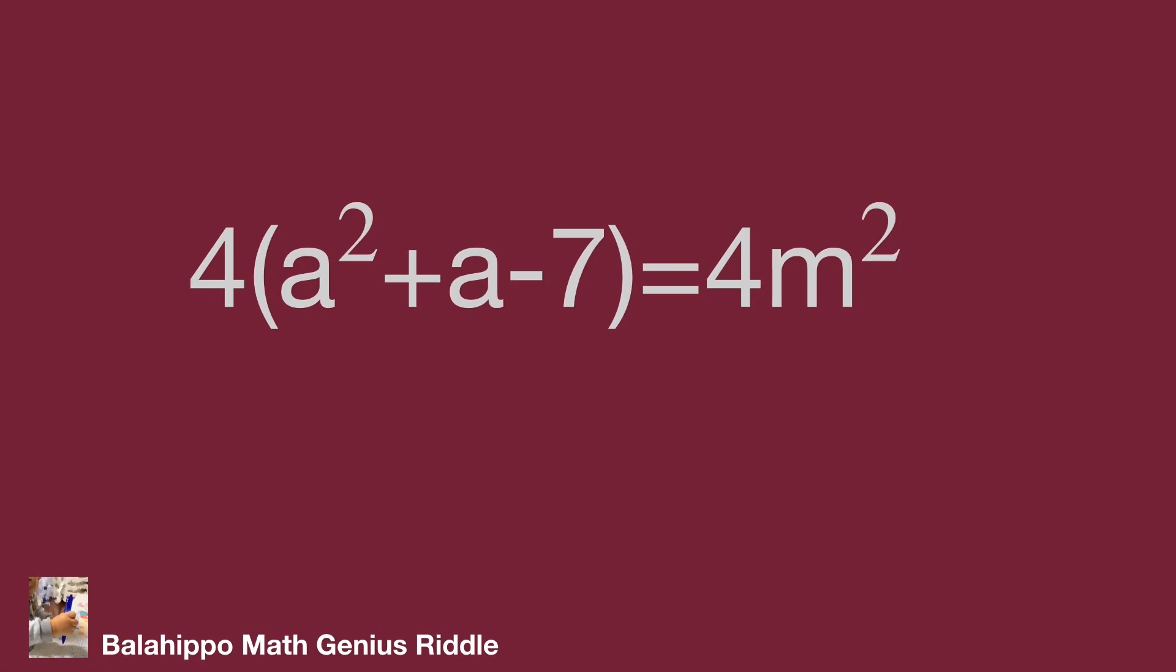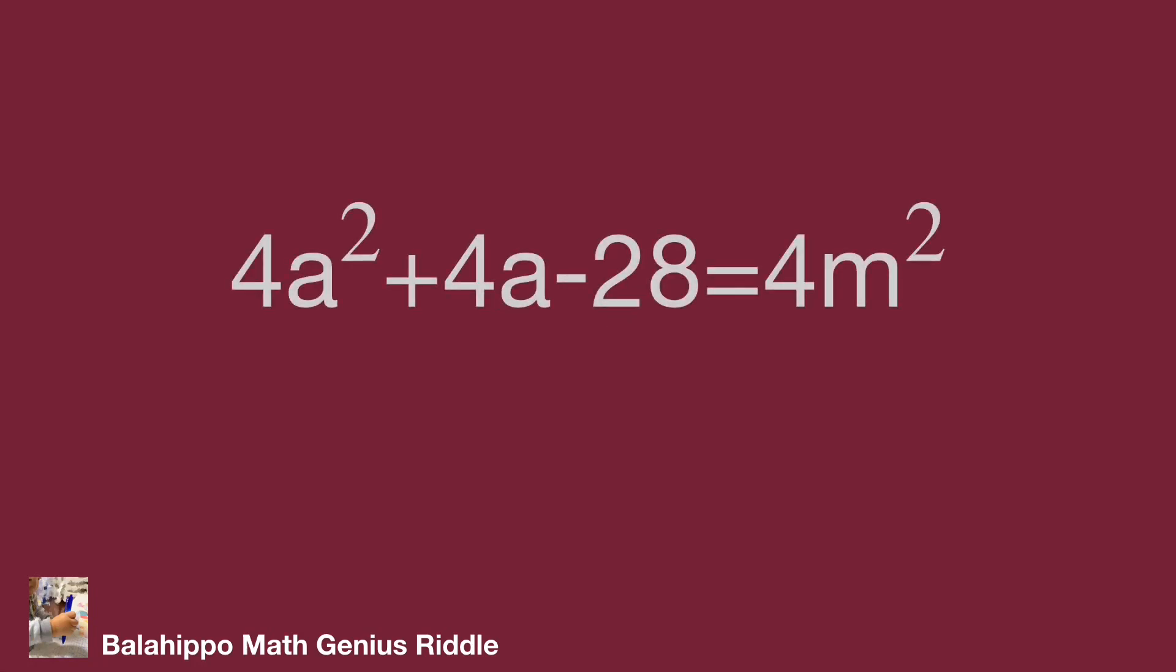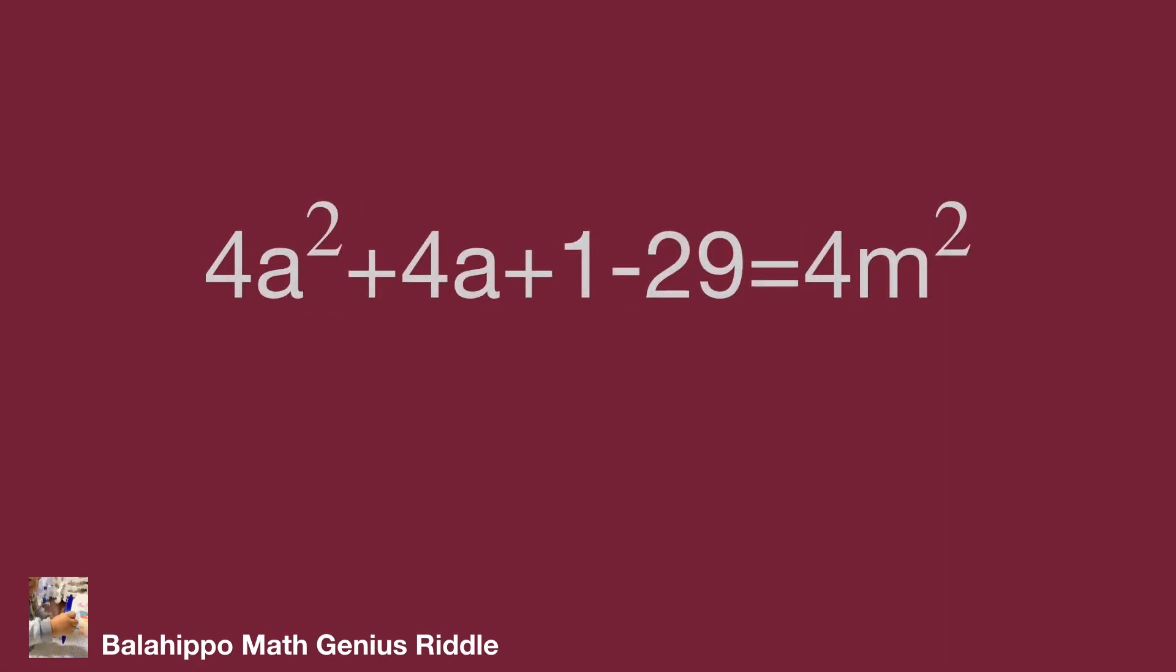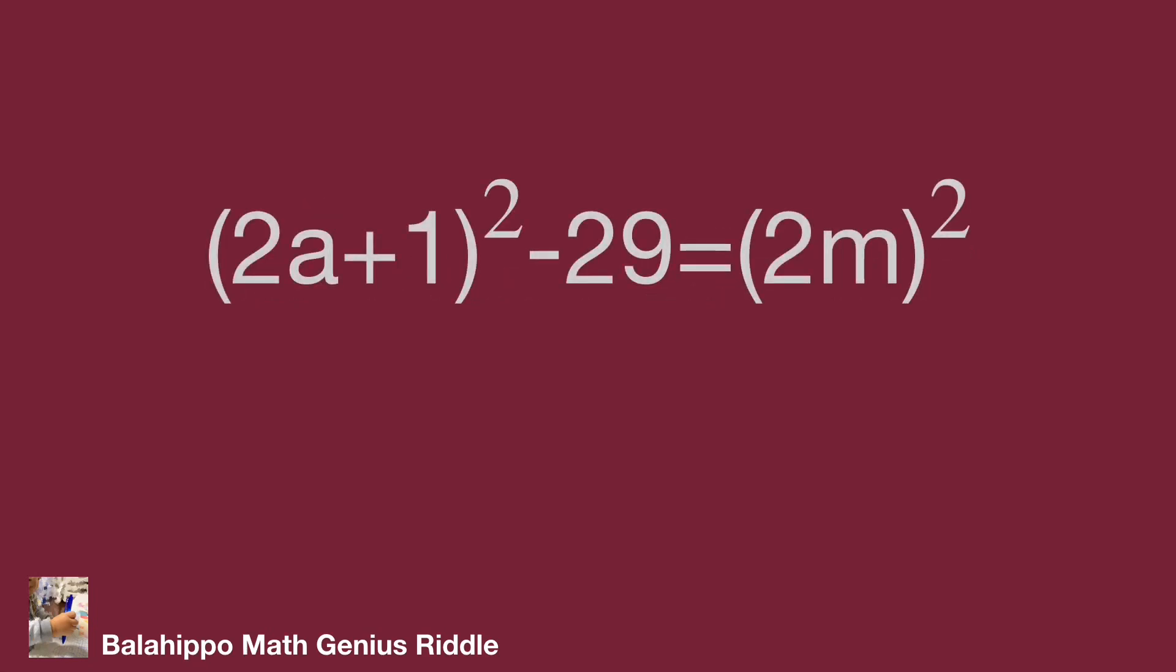Develop that as 4a squared plus 4a minus 28 equals 4m squared. Minus 28 distributes to 1 minus 29, and put 1 and 4a squared plus 4a as one group to generate a square, and 4m squared as quantity 2m squared. Then it becomes quantity 2a plus 1 squared minus 29 equals quantity 2m squared.